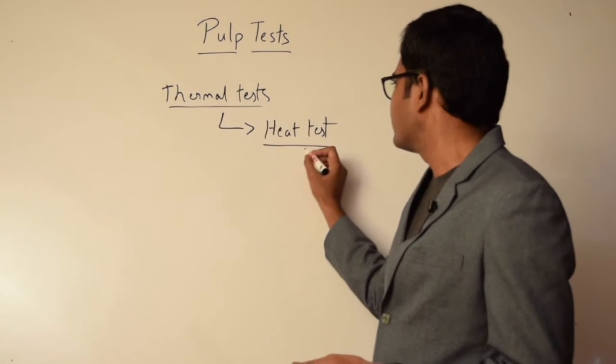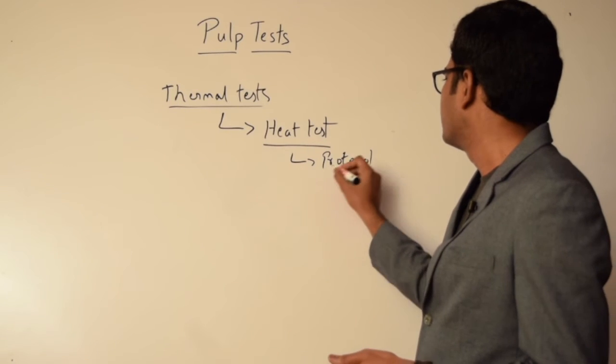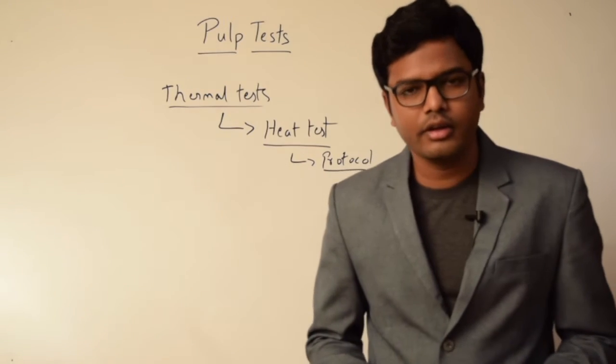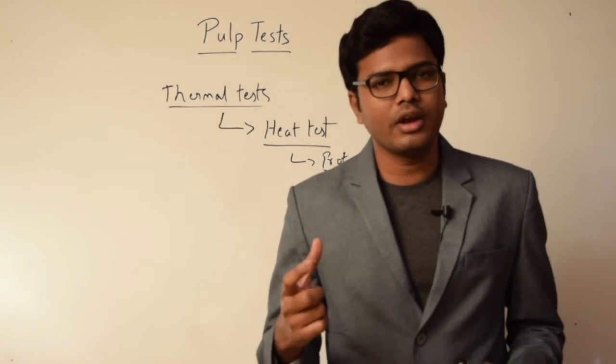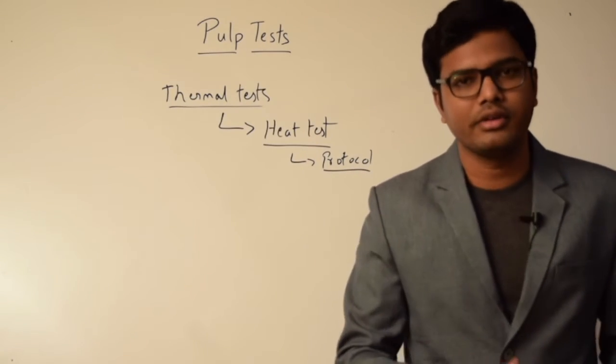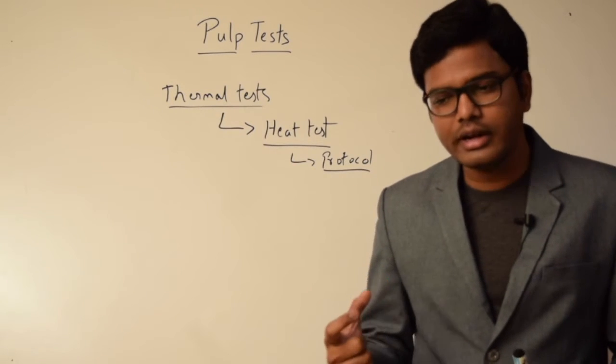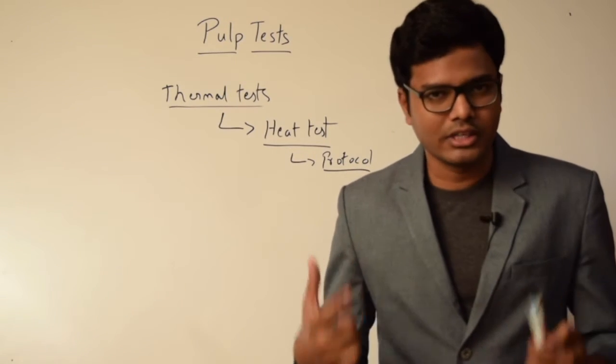If a patient complains of pain in the lower right back tooth region - the fourth quadrant - we need to start from the posterior-most tooth in that quadrant and move anteriorly. Rubber dam isolation is mandatory, and we need to isolate each tooth individually and wait for the response.